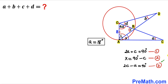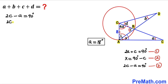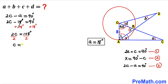Now let's focus on Equation 3. Substituting A equals 18 degrees into 2C minus A equals 90 degrees gives 2C minus 18 degrees equals 90 degrees. Adding 18 degrees to both sides, our angle C turns out to be 54 degrees.